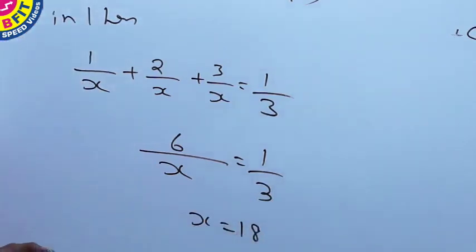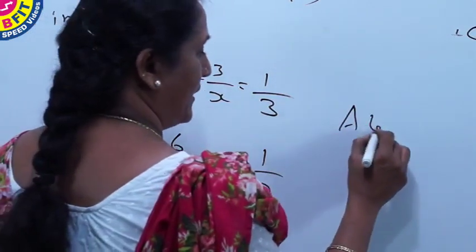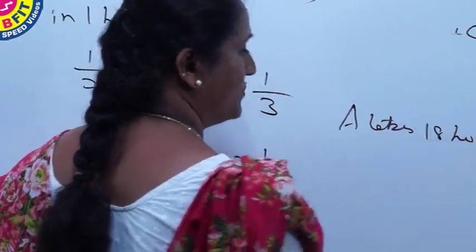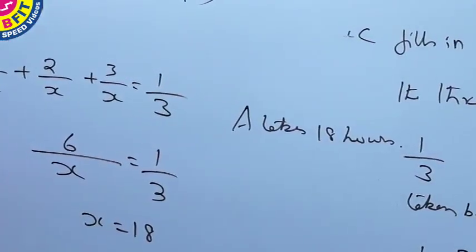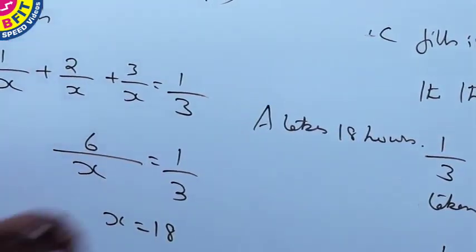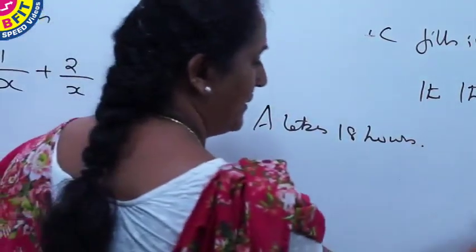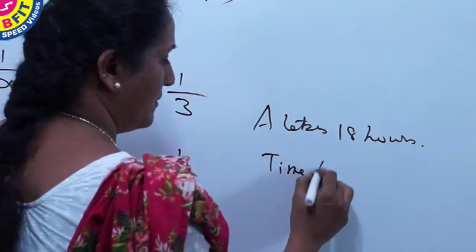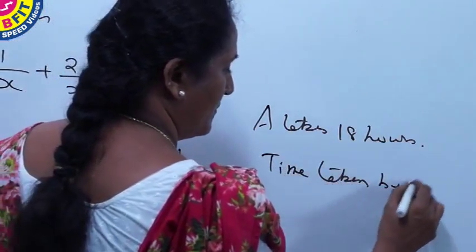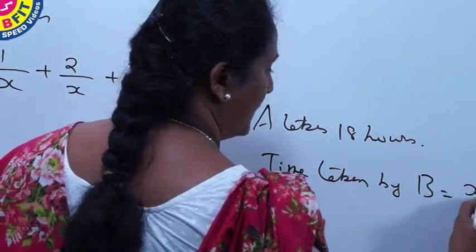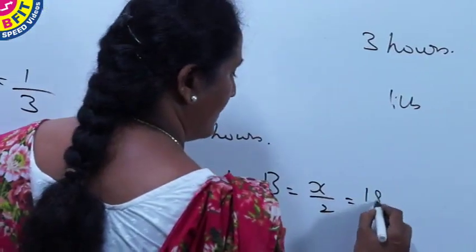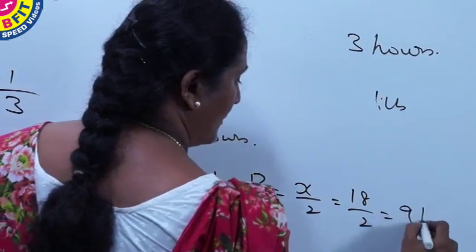So time taken by A, we have taken as X hours. So A takes 18 hours to fill the tank. And we are asked to find for B, which is half of time taken by A. So time taken by B, X by 2, that is half of time taken by A, 18 by 2 are 9 hours.